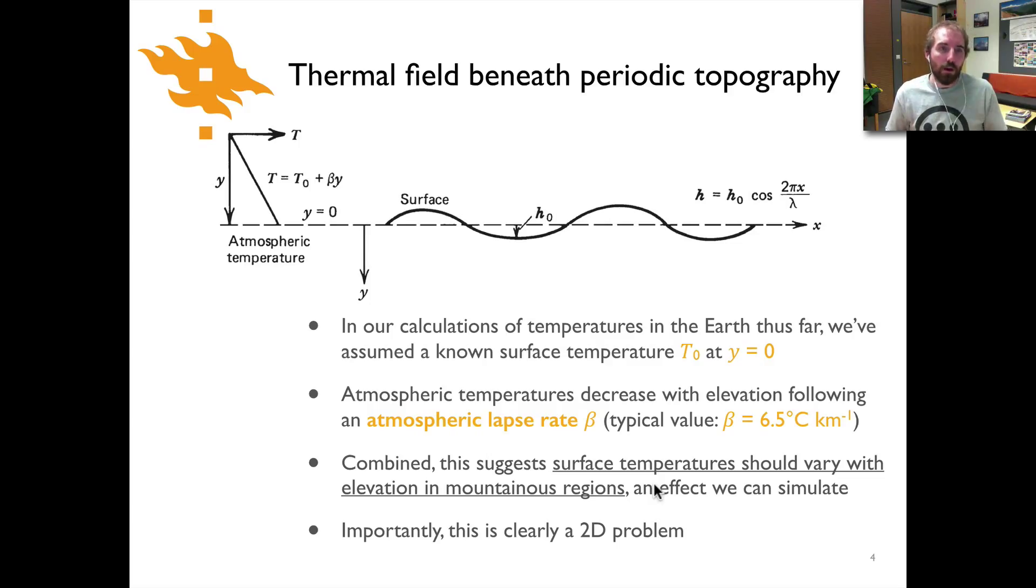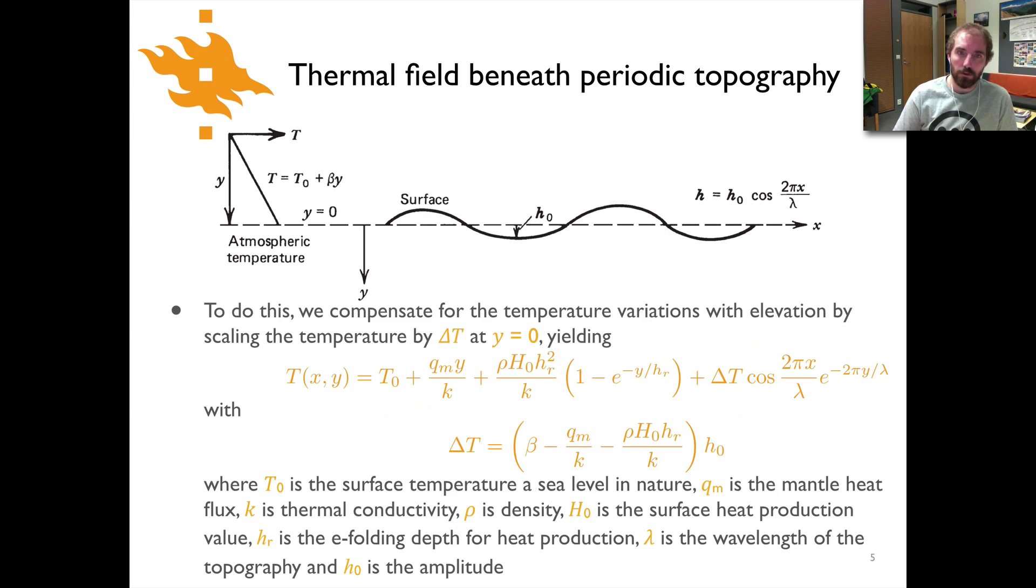Now this suggests already that we should see variations in the temperature at the surface of the earth in mountainous areas because of course we have significant elevation ranges and so this is something that we can incorporate in a calculation of temperatures. Now the other thing that's important here and it's a clear difference from our previous cases is that this is now a two-dimensional problem.